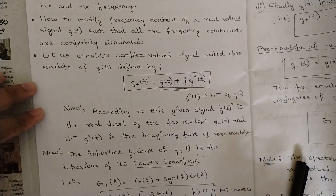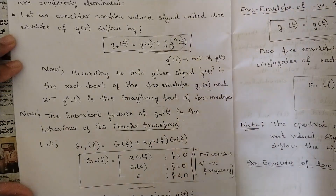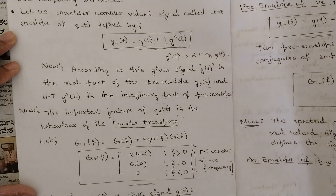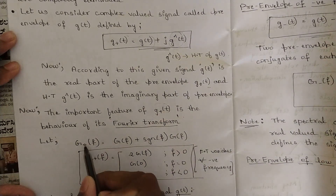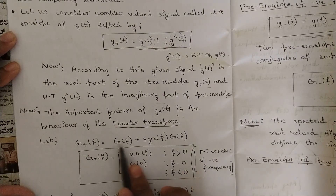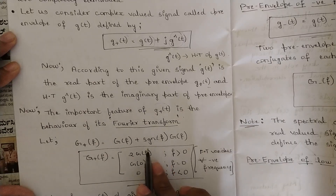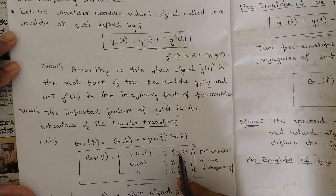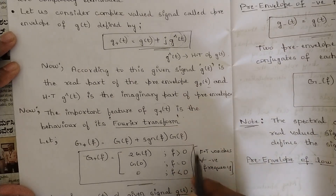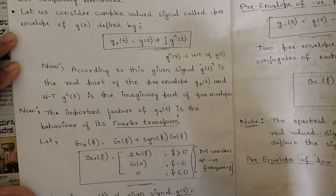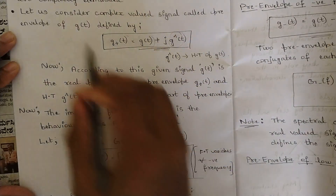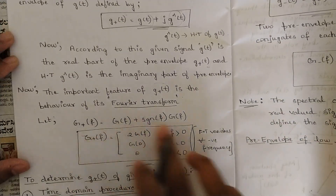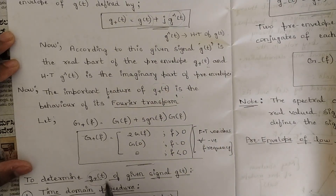The important feature of this pre-envelope G+(t) is the behavior of its Fourier transform. Let G+(f) represent the pre-envelope in the frequency domain. G+(f) is equal to G(f) plus sgn(f)·G(f). That is, G+(f) has three values: it is two times G(f) when frequency is greater than zero; it is G(0) when frequency is equal to zero; and it is zero when frequency is less than zero, since all negative frequency components are eliminated.